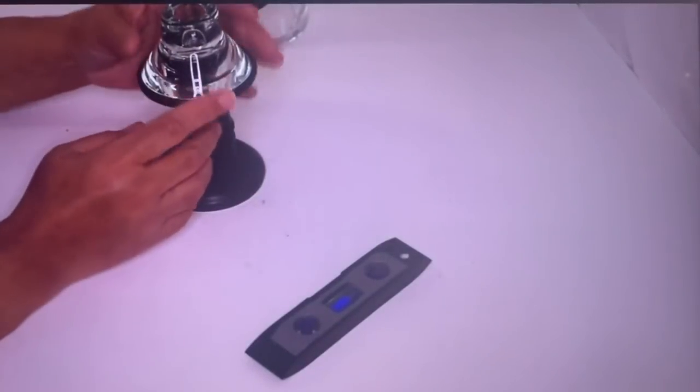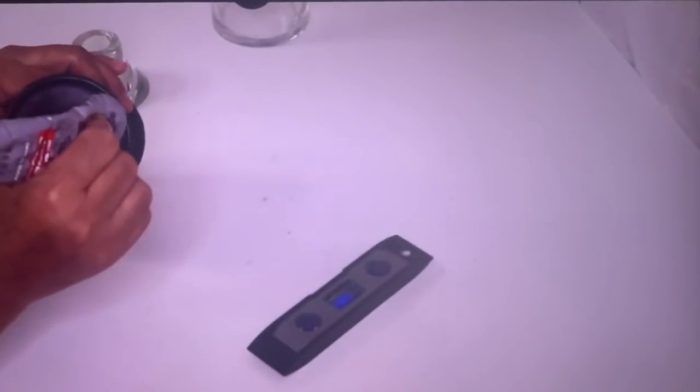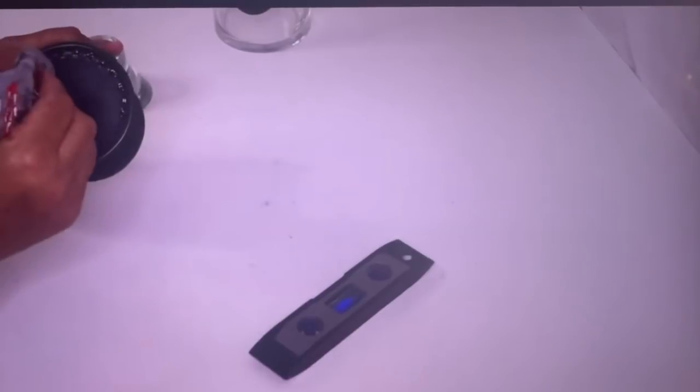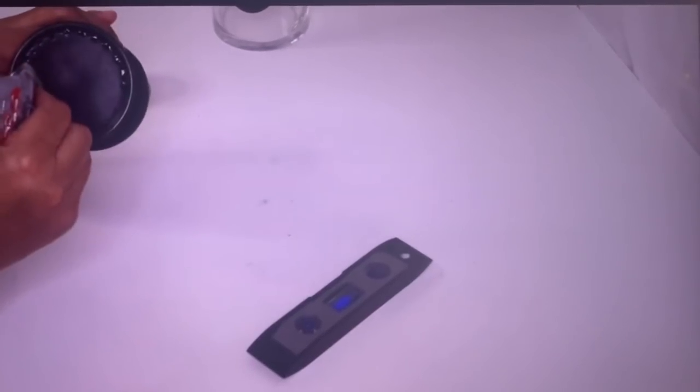we're just going to glue the votive holder on top of the candle holder. It's kind of weird the way it sits, so you're going to put some glue right around the edge and then right inside the lip.